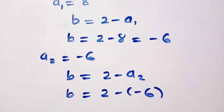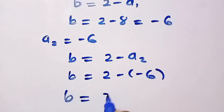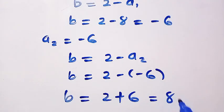As we have negative negative here, when they multiply each other it gives us positive. Therefore we have b equals 2 plus 6 which equals 8.